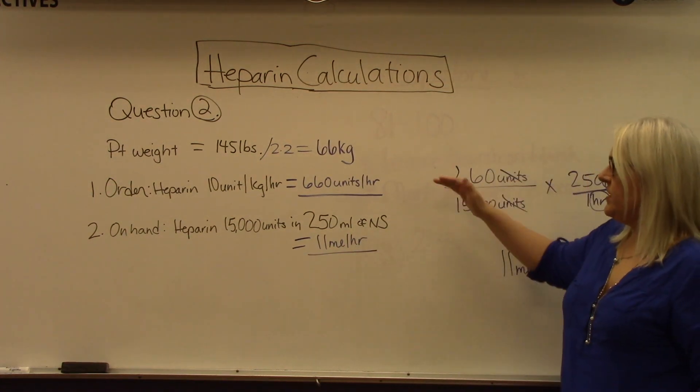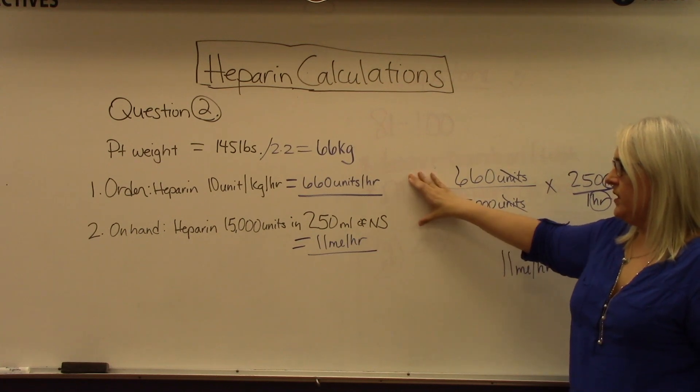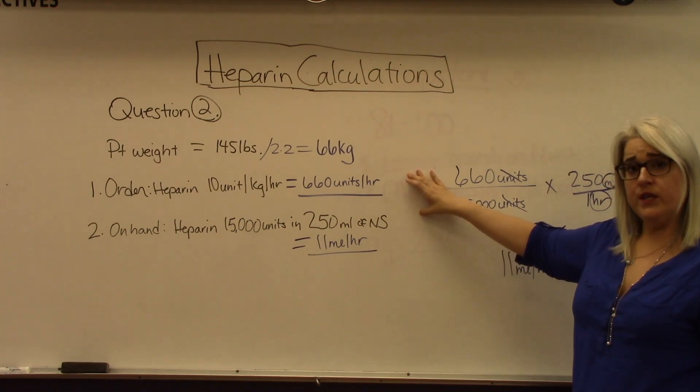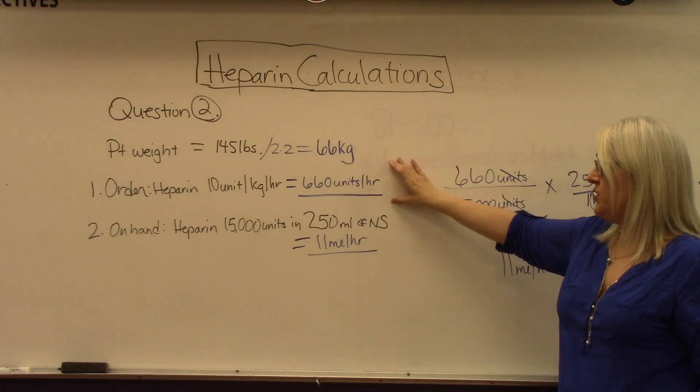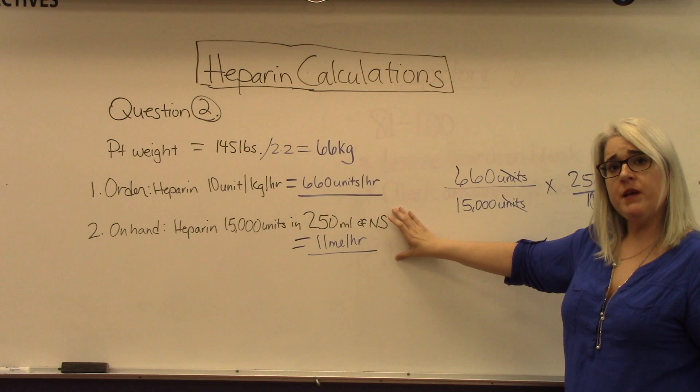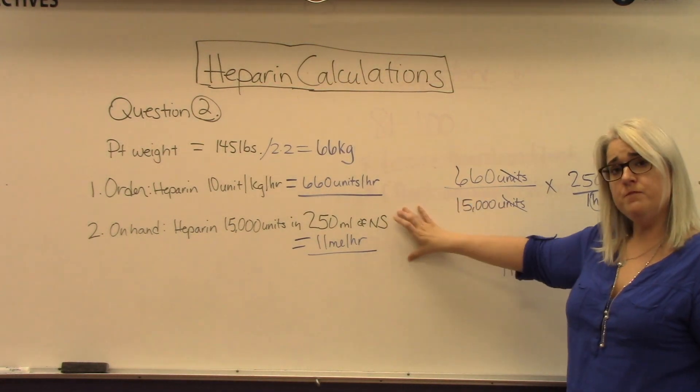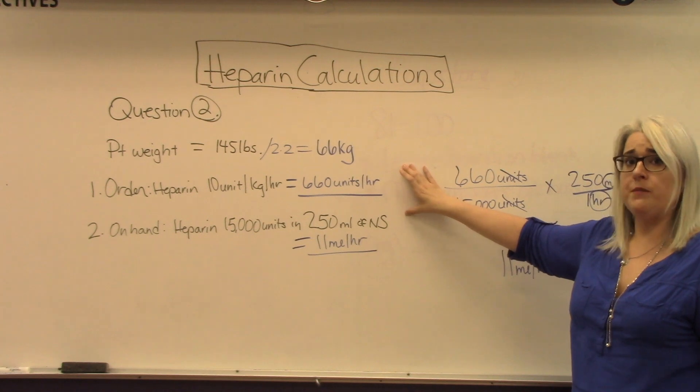You could take either of these answers and use it to say what your patient's hourly dose rate is. This would be in units and this would be in milliliters. When we program an IV pump, it will tell us both of these, and that's how we know we've programmed it correctly.